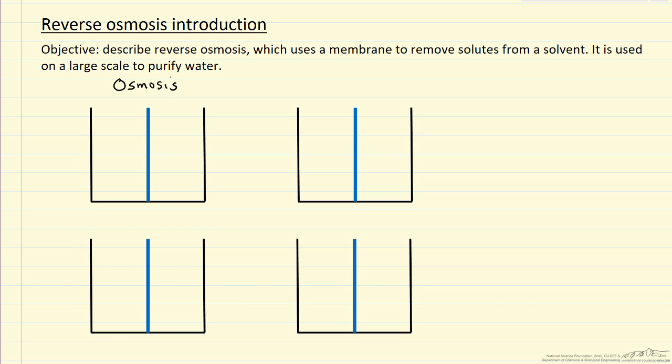Suppose I'm looking at the cross section of a container, and this is a membrane that divides two halves of the container. This membrane will allow water to permeate, but will not allow salt. So let's start out, suppose we put water on both sides at equilibrium, the heights of the water will be the same.